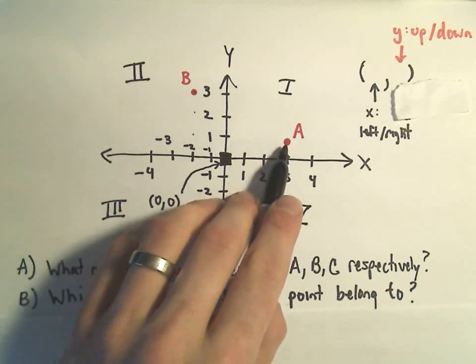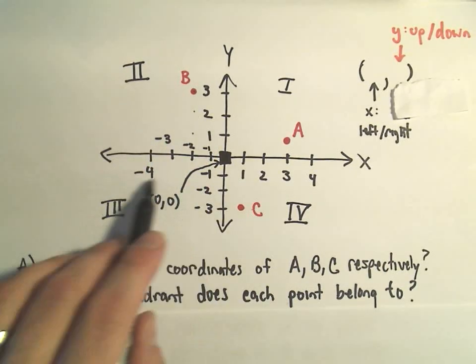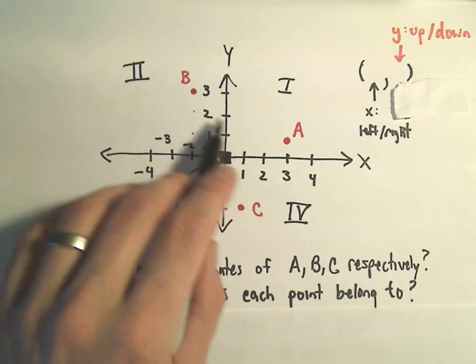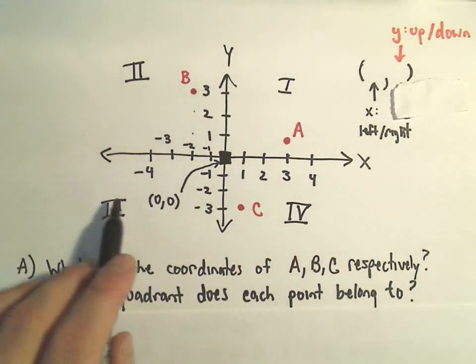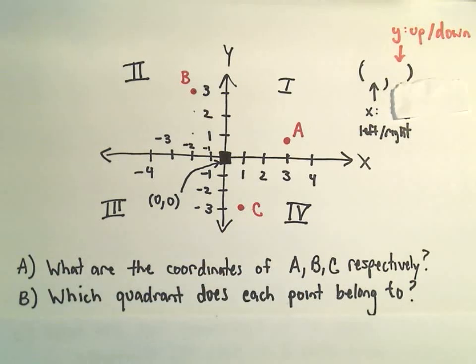So point C, so A belongs to quadrant 1. B belongs to quadrant 2. We don't have, you know, none of our three points that we have listed belong to quadrant 3. But C belongs to quadrant 4.